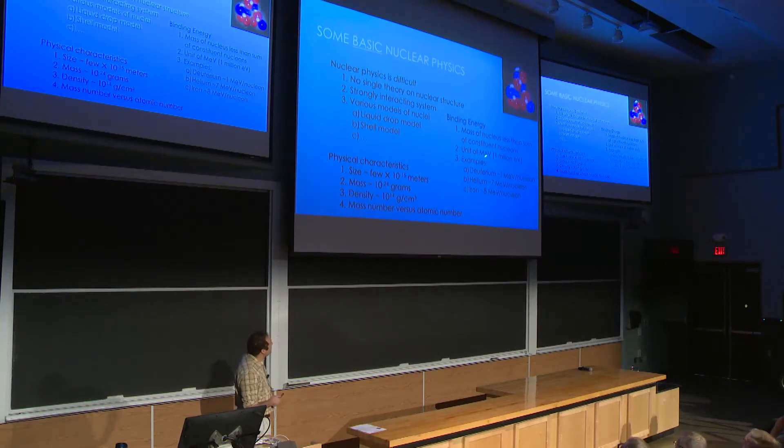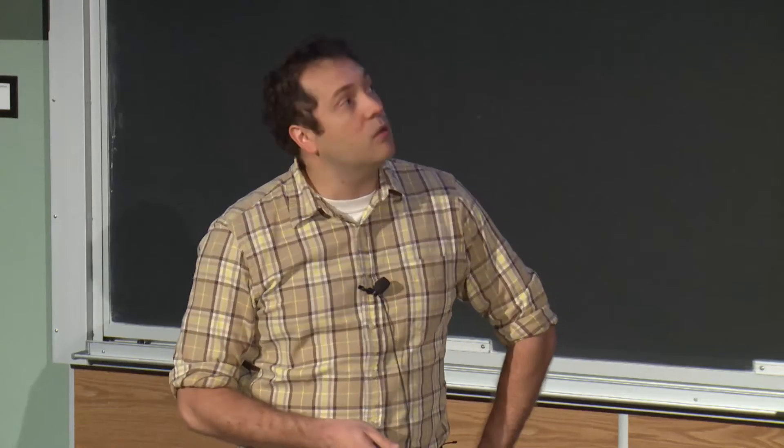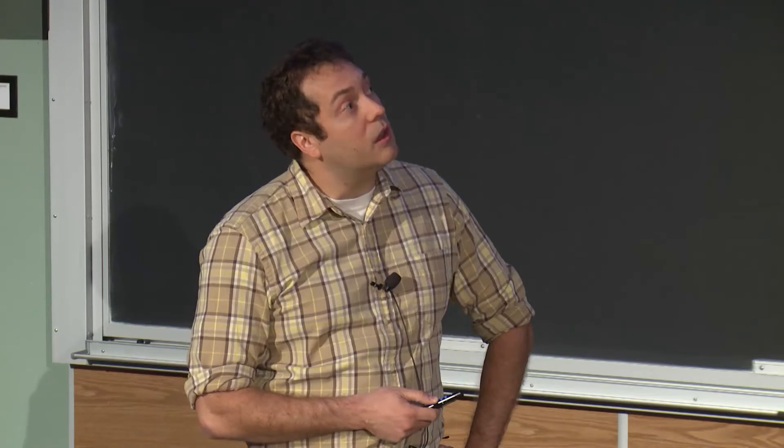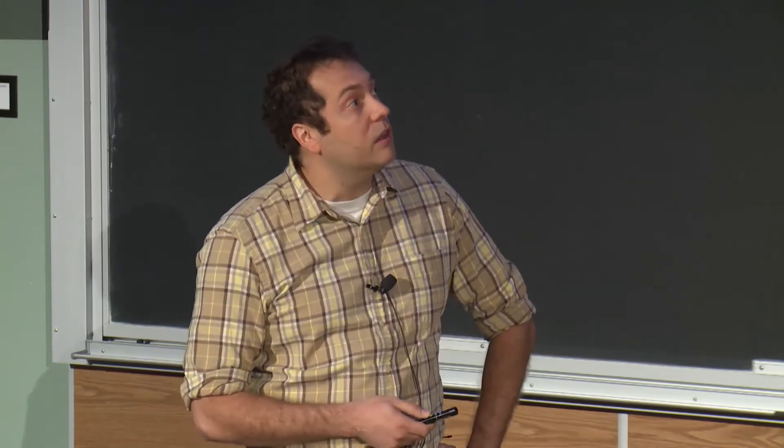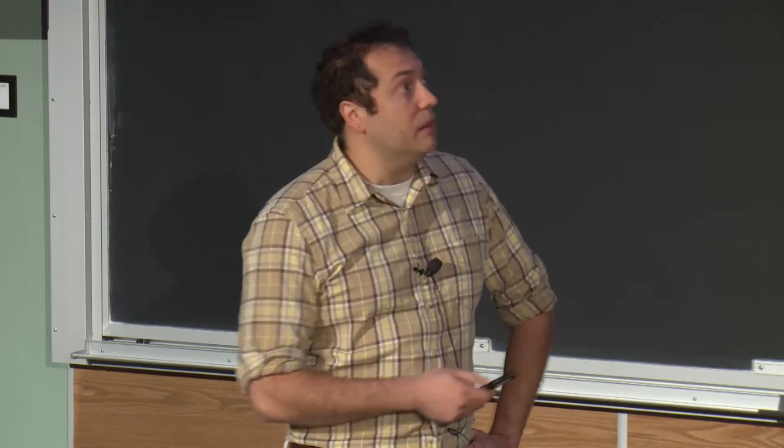A nucleus is composed of neutrons and protons. The protons are given by the atomic number. This tells you the chemistry of that element. And the sum of the neutrons and the protons is the mass number, which tells you the nuclear properties of that element. If you take the constituent nucleons of a nucleus, so let's say you have six protons and six neutrons here in carbon 12, you weigh those separately, you get a different answer for when you put them together and weigh the nucleus as a whole.